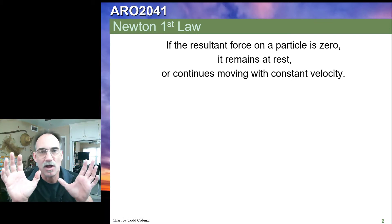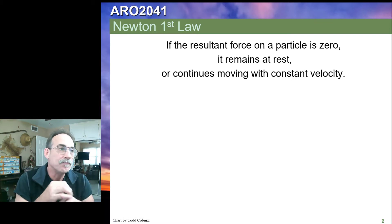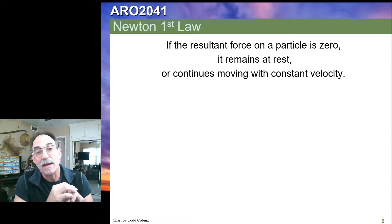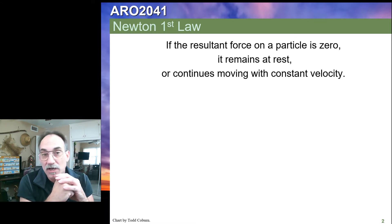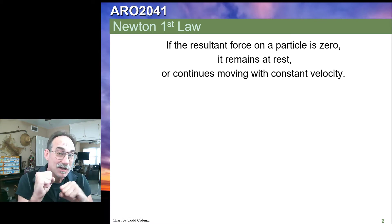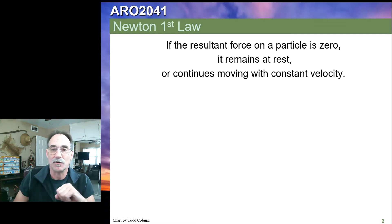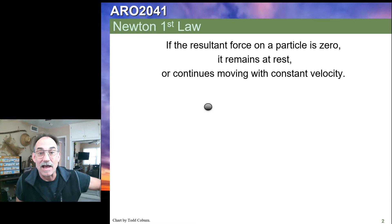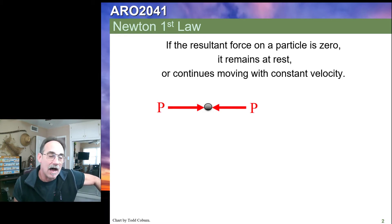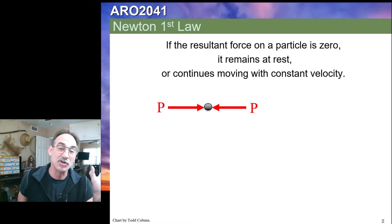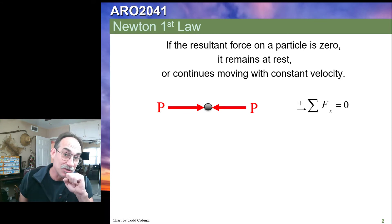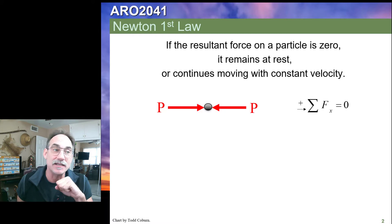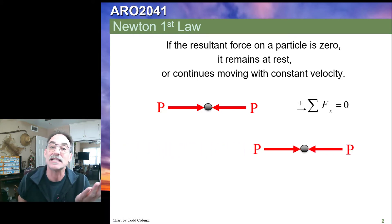Newton's first law states that if the resultant force on a particle is zero, then that particle remains at rest, or if it happens to be moving at constant velocity, it continues to move at constant velocity. If the sum of forces are equal to zero — one force acting this way equals the force acting the other way — the sum of forces is zero and that particle remains at rest. If it was moving at constant velocity and experiences a balanced set of forces, the velocity will remain unchanged.